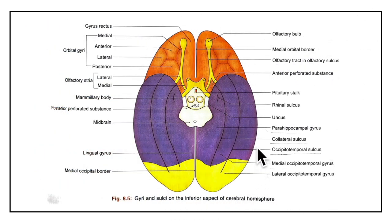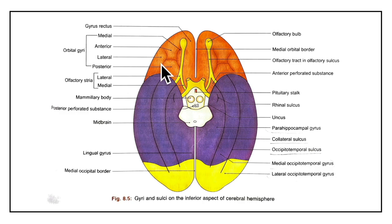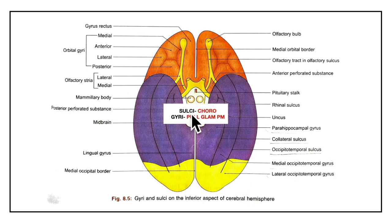Now let's learn about the sulci and gyri of the inferior surface. The sulci include: the olfactory sulcus, the H-shaped orbital sulcus, the rhinal sulcus, the collateral sulcus and the occipitotemporal sulcus. The gyri include: the gyrus rectus, anterior orbital gyrus, posterior orbital gyrus, medial orbital gyrus, lateral orbital gyrus, the lingual gyrus, the uncus, the parahippocampal gyrus, the medial occipitotemporal gyrus and the lateral occipitotemporal gyrus.